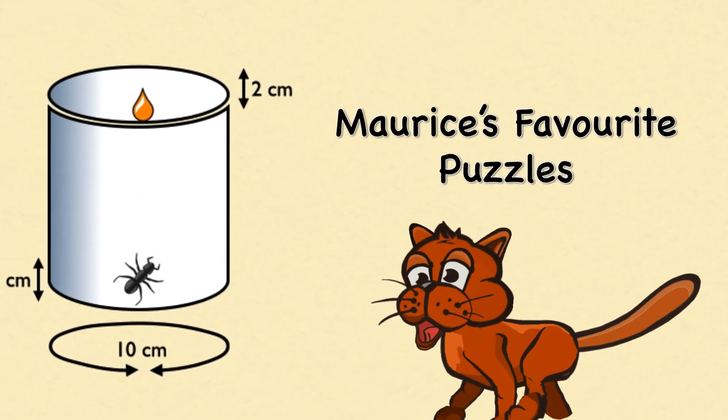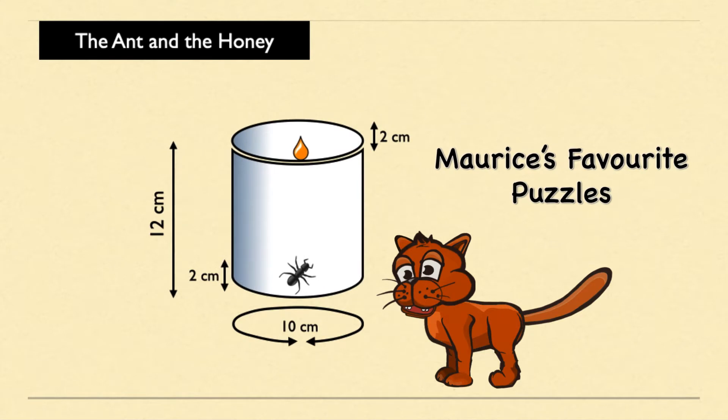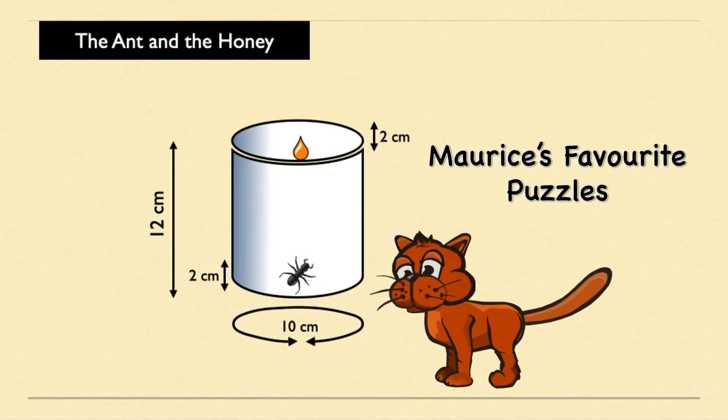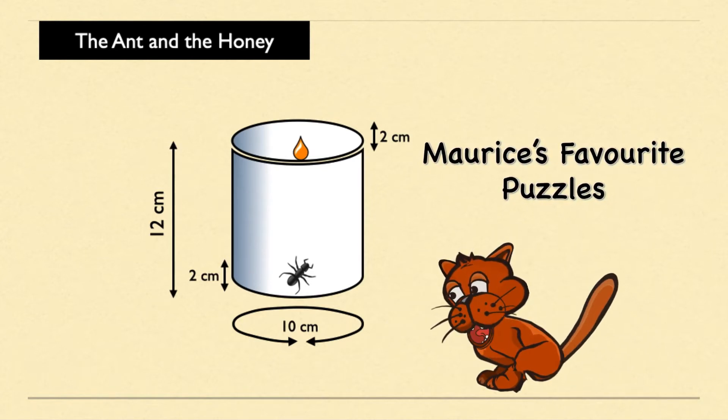Hello, my name is Maurice, the puzzle-loving cat, and here is another one of my world-famous puzzles. This one is called The Ant and the Honey.